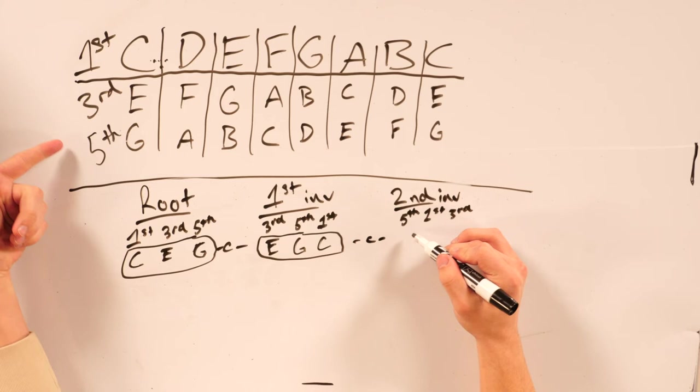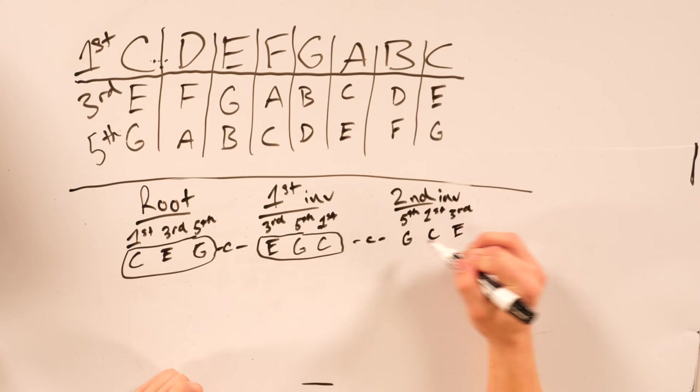So we still have a C chord, and for its second inversion, it would go G for the fifth, C for the first, and E for the third. With these chords, use the inversions for every one of these, but you use the first, third, and fifth. The numbers are going to be your main helper here. But I'm going to show you on the keyboard how you use these and put these into your playing.